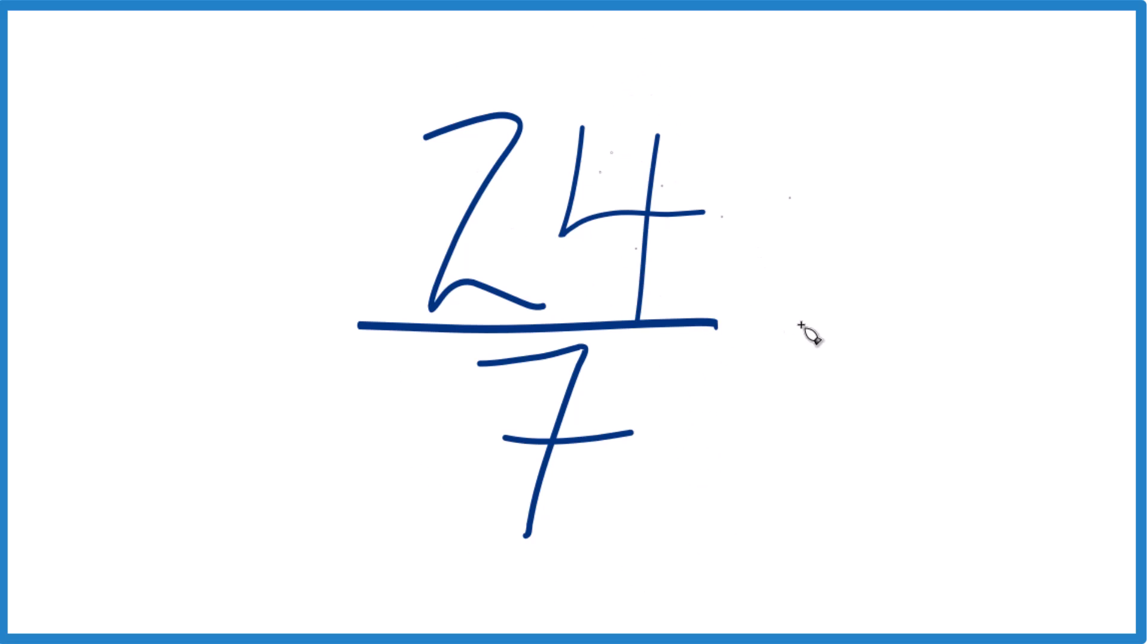The thing is, the only number that divides evenly into 24 and 7 is 1. That's our common factor. If we divide 24 by 1 and 7 by 1, we get 24 7ths. So this is already simplified. We can't reduce it any further.